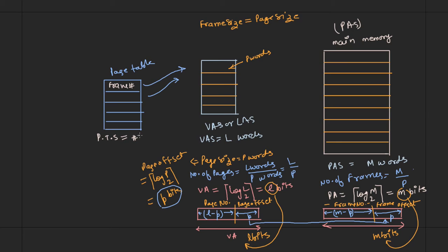The page table size equals the number of entries multiplied by the entry size. The number of entries is L divided by P (capital L by capital P), and the entry size is the frame number field, which is m minus p bits. So the page table size is (L/P) × (m − p) bits, where capital L is the logical address space size, capital P is the page size, small m is bits for the physical address, and small p is bits for the page offset.